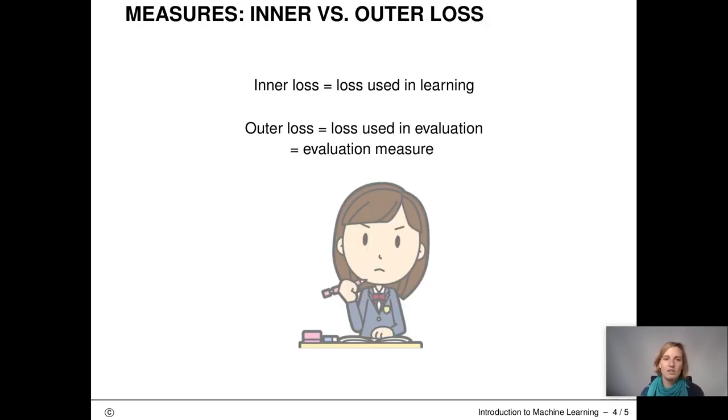When we discussed losses in previous units, we talked about how to set up a learner and how to compute a model. We use the loss as something to optimize over. Of course, we cannot only use loss for training a model, but also for evaluating a model. In an optimal scenario, we know exactly what we want. We know which loss should be used. We use this loss both for training and for evaluating. The loss used for learning is called inner loss. The loss used for evaluating is called outer loss.